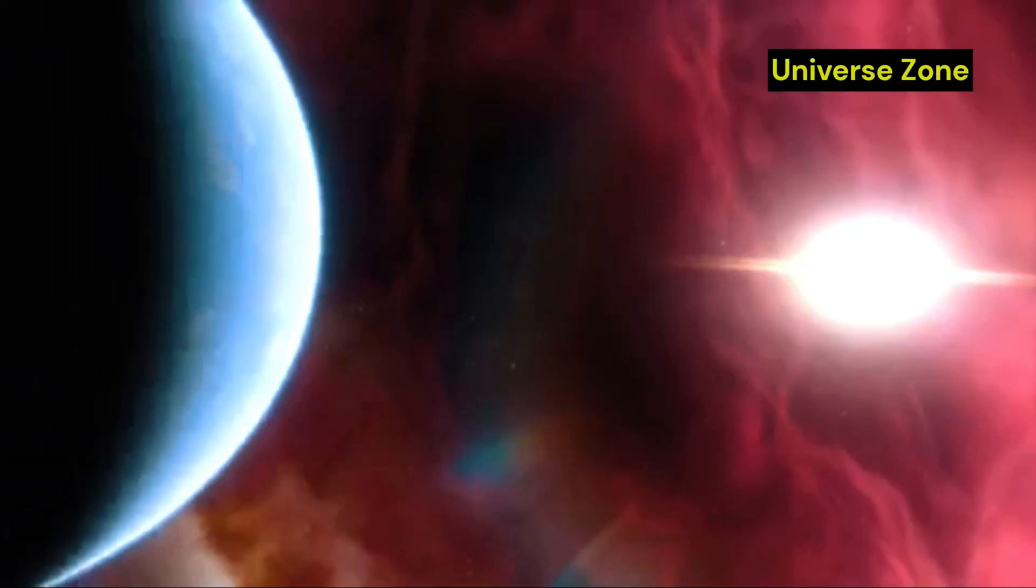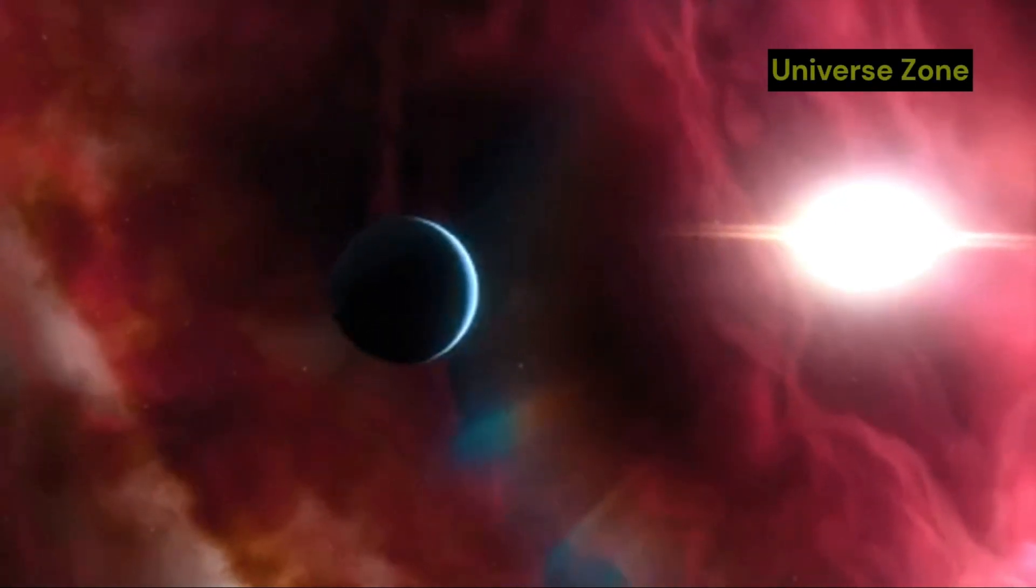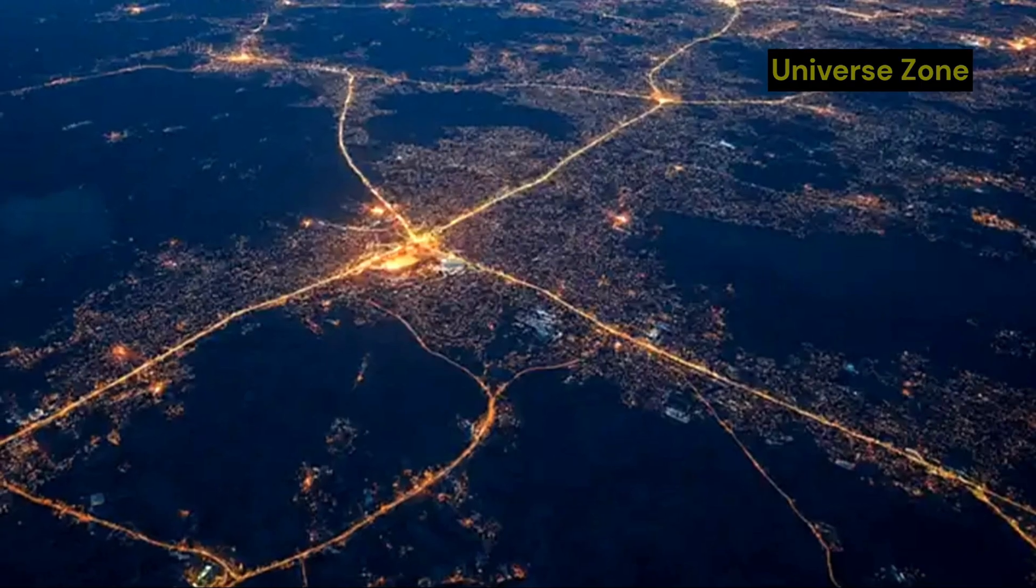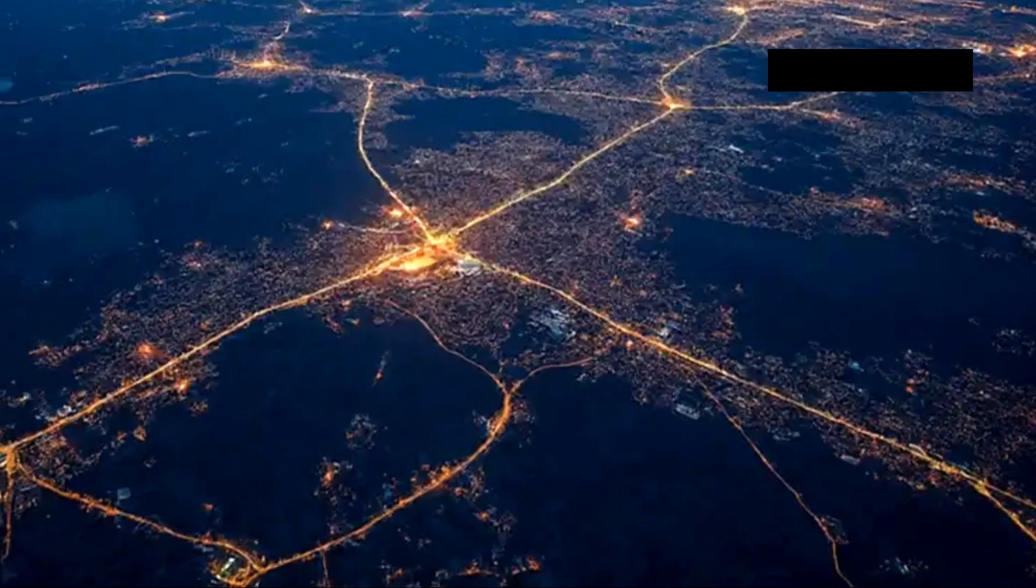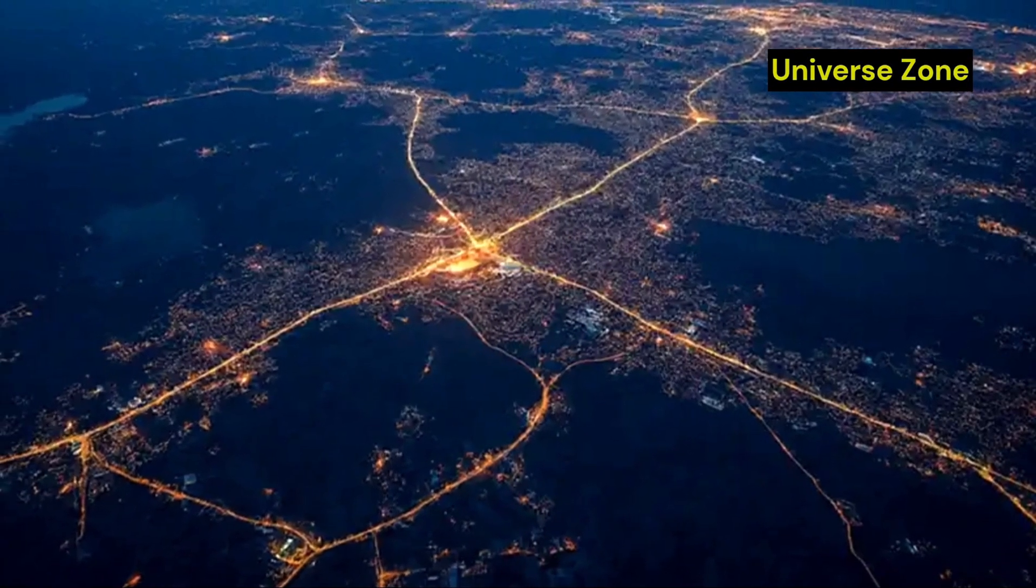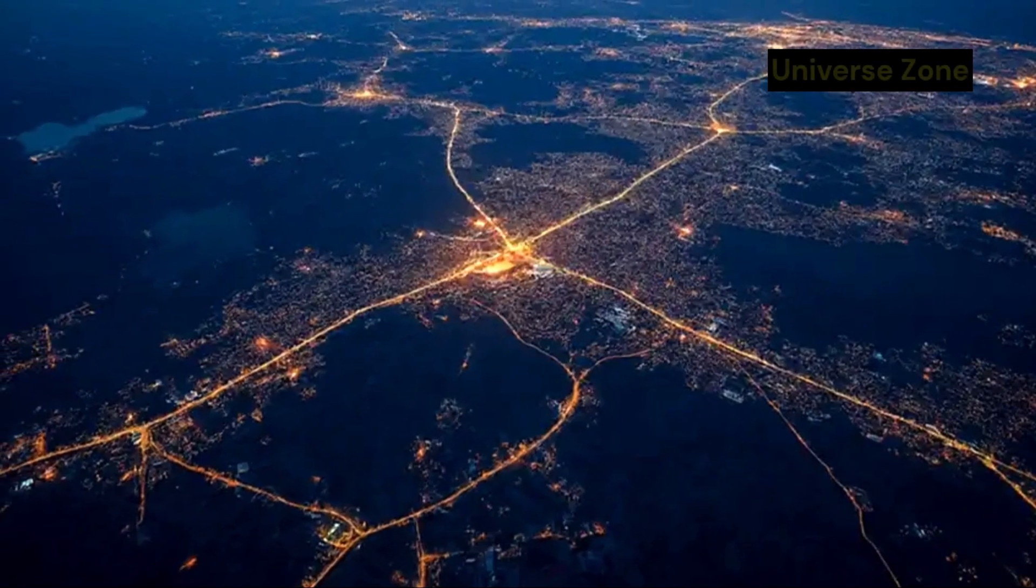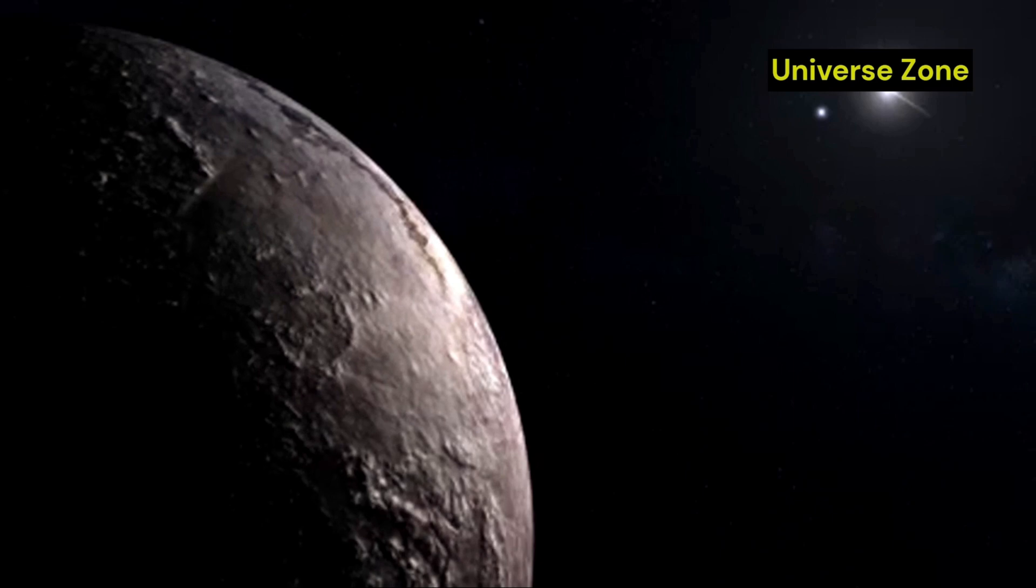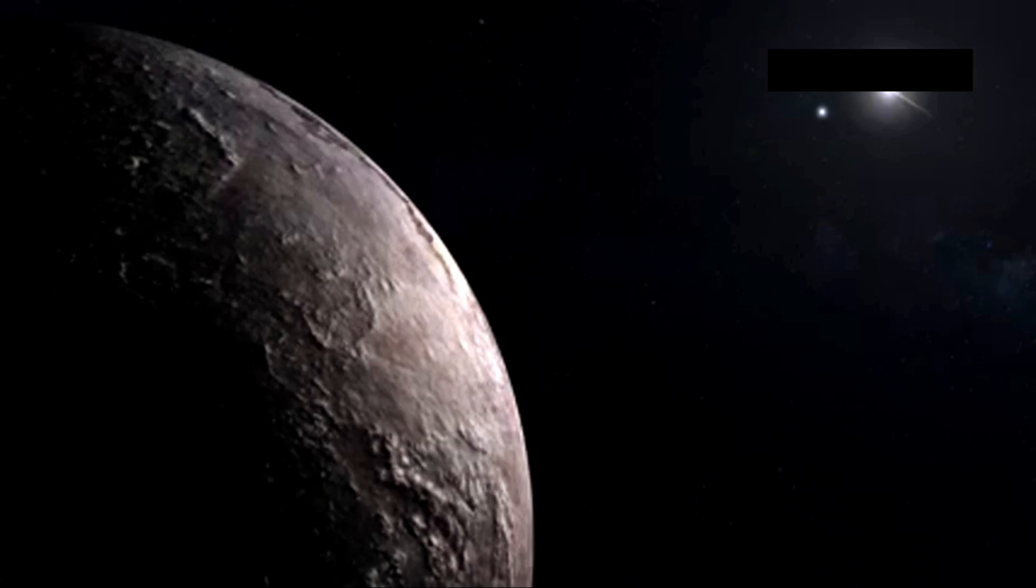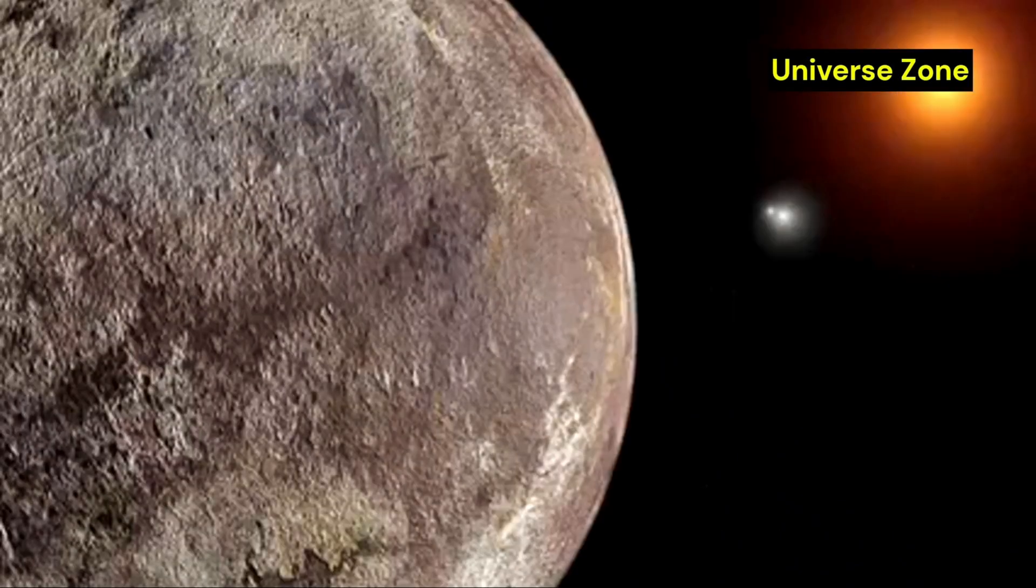This planet is located just 4.24 light-years from Earth, making it our closest stellar neighbor and a prime candidate for further study. The discovery of Proxima b in 2016 was a major event in the world of astronomy, sparking excitement and curiosity about the potential for life on this distant world. It was the first time we had found a planet orbiting another star that was potentially habitable, opening up new possibilities for future exploration.